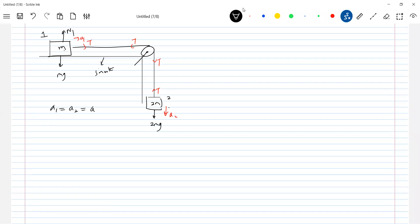This is vertical. So what is acceleration equal to? 2mg by 2m plus m. So this is g by 3.